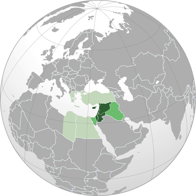The term Levant, which appeared in English in 1497, originally meant the East in general or Mediterranean lands east of Italy. It is borrowed from the French Levant, meaning "rising," referring to the rising of the sun in the east, or the point where the sun rises. The phrase is ultimately from the Latin word levare, meaning "lift" or "raise."